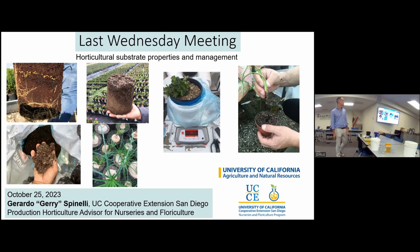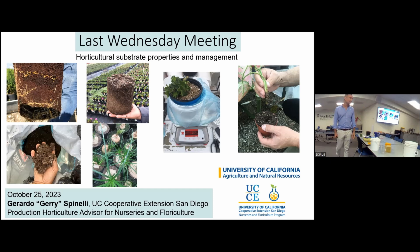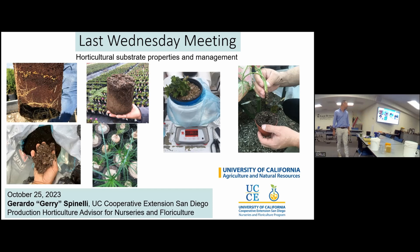Substrate is very different from mineral or native soil. One of the most important differences is density. Real soil is very heavy — you wouldn't be able to pick up a 15-gallon container filled with clay. But if it's filled with a peat-based substrate, you can pick it up even if there's a tree in it. I'm showing examples: substrate with nitrogen fertilizer prills, and a peat-based substrate with perlite.